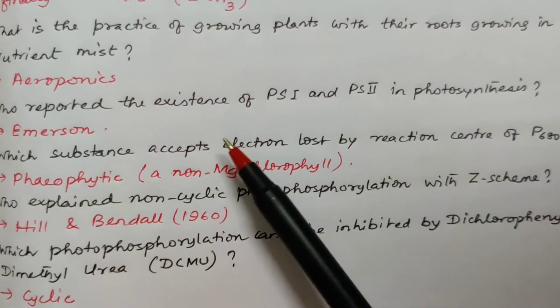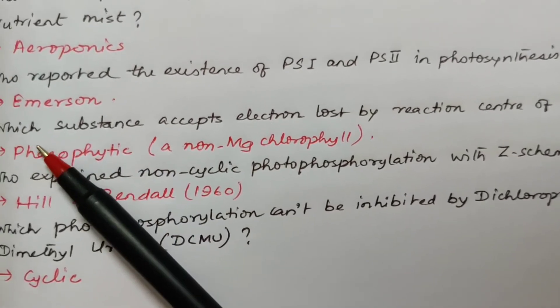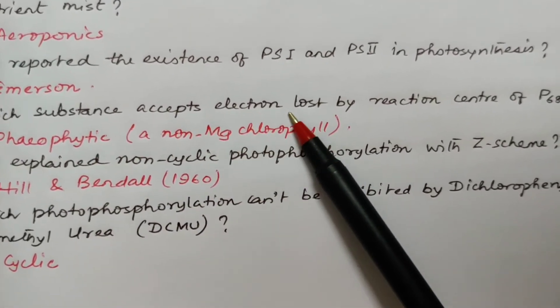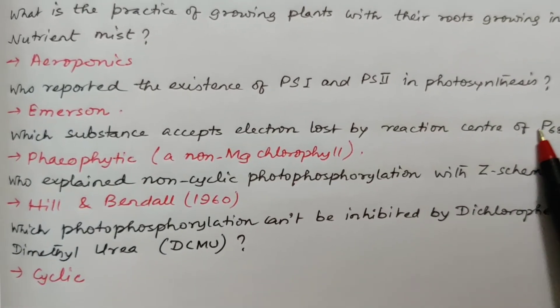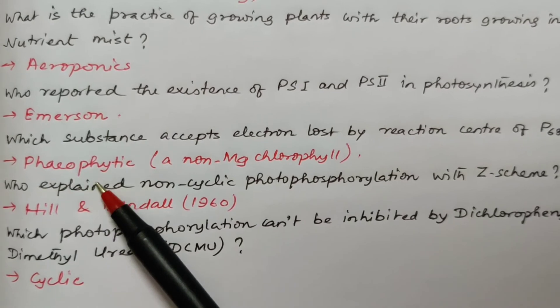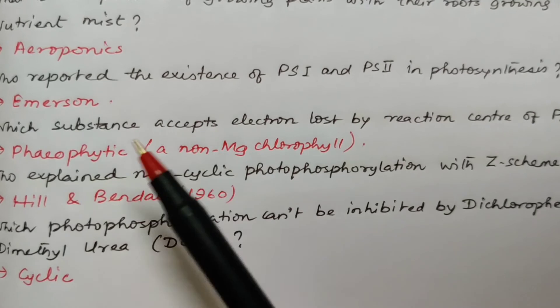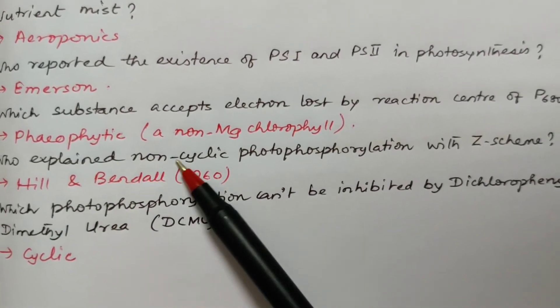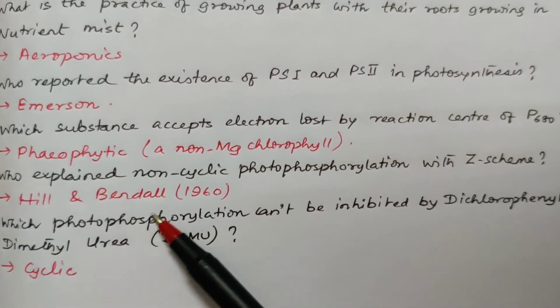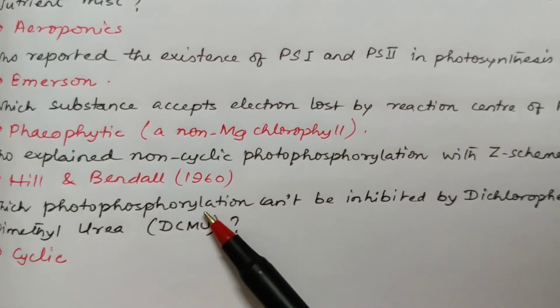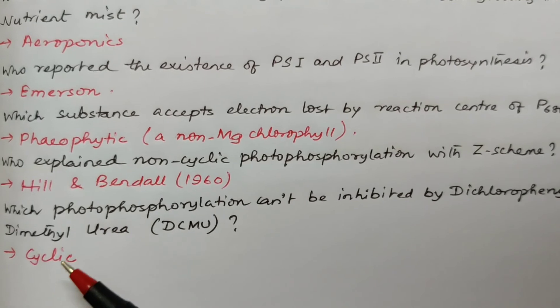Who reported the existence of photosystem 1 and photosystem 2 in photosynthesis? Emerson. Which substance accepts electron lost by reaction center of P680? It's P5T. It's a non-magnesium chlorophyll. Who explained non-cyclic photophosphorylation with Z scheme? It's Hill and Bendal, 1960. Which photophosphorylation can't be inhibited by dichlorophenyl dimethyl urea DCMU? It's cyclic.